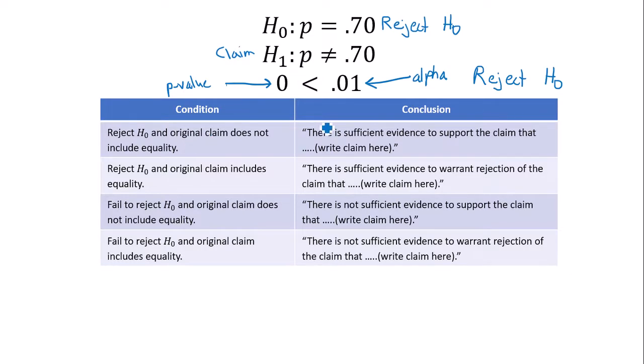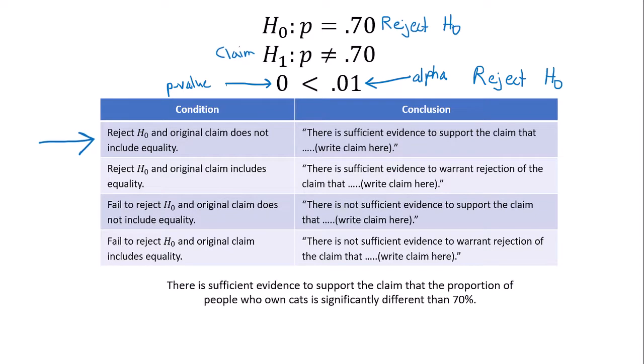Using my table of conclusion statements, we rejected H-naught and our original claim does not include equality. My claim did not include equality. So this is my conclusion statement here. There is sufficient evidence to support the claim that the proportion of people who own cats is significantly different than 70 percent.